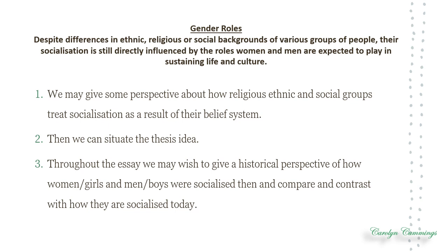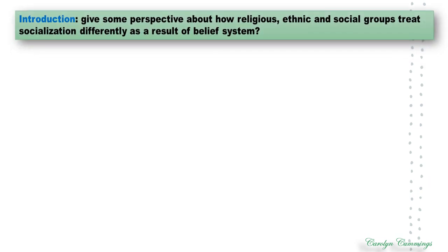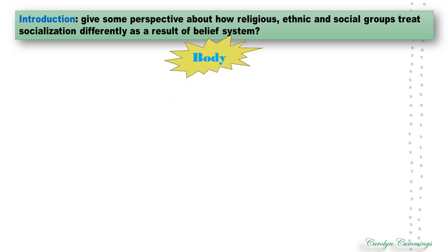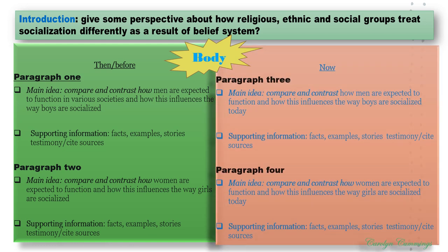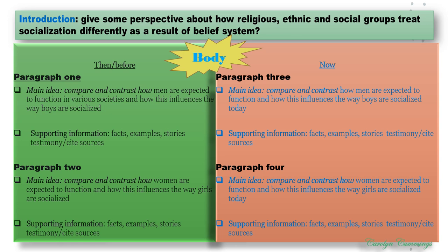So let's look at it a little more closely. In your introduction, you can provide some context or perspective about how religious, ethnic, and social groups treat socialization differently as a result of their belief system — a general statement about this. Then we go on to the body where we break it down into two sections: 'then' and 'now.' The 'then' section could take up two or possibly three paragraphs.